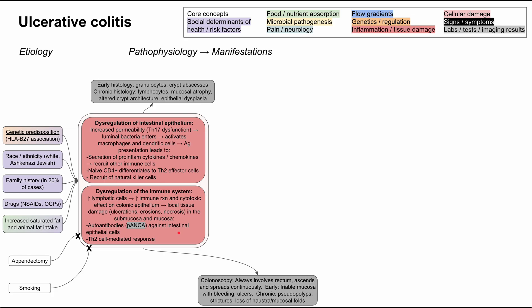On colonoscopy, ulcerative colitis always involves the rectum — in contrast to Crohn's disease, which typically spares it. UC is also continuous and tends to ascend from the rectum up the colon. In early cases, you'll see friable mucosa with bleeding and ulcers, and as the disease progresses, pseudopolyps, strictures, and loss of haustra or mucosal folds.